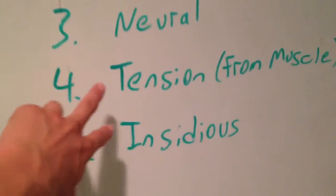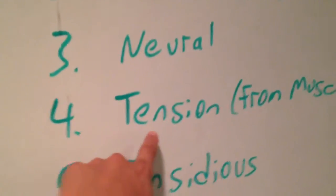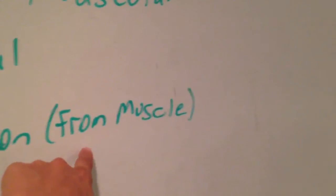The big two we're talking about here are tension and insidious headaches. Insidious is basically a fancy term for 'I don't know where your headaches come from.' We actually have diagnosis codes called insidious headaches because we don't know where they originate. It's not well researched and it's still being investigated. But the good news is that tension headaches are usually coming from muscles.